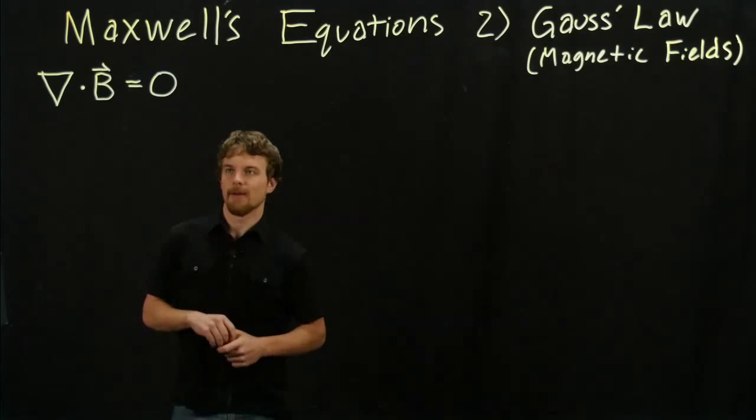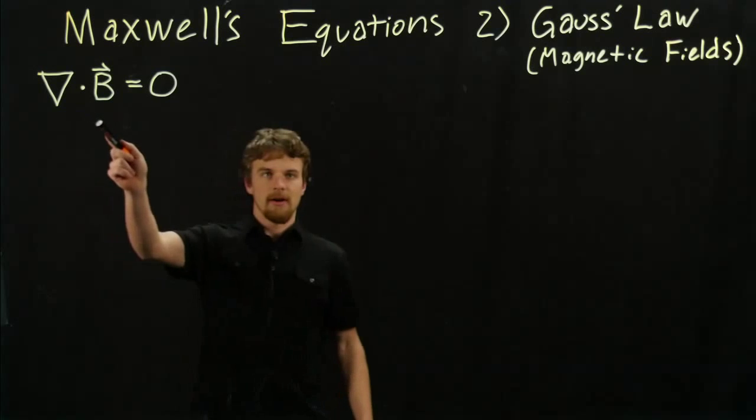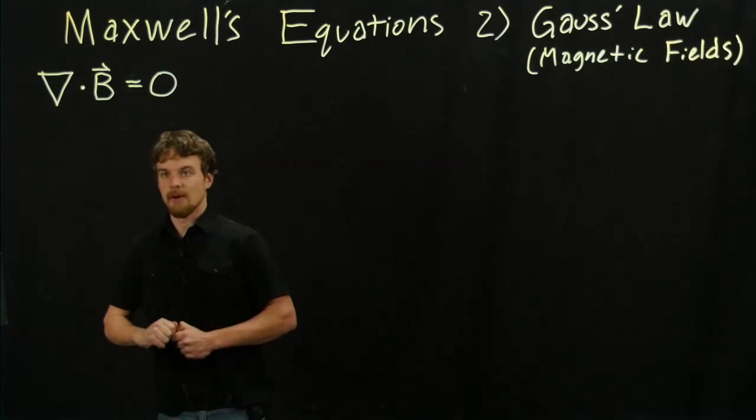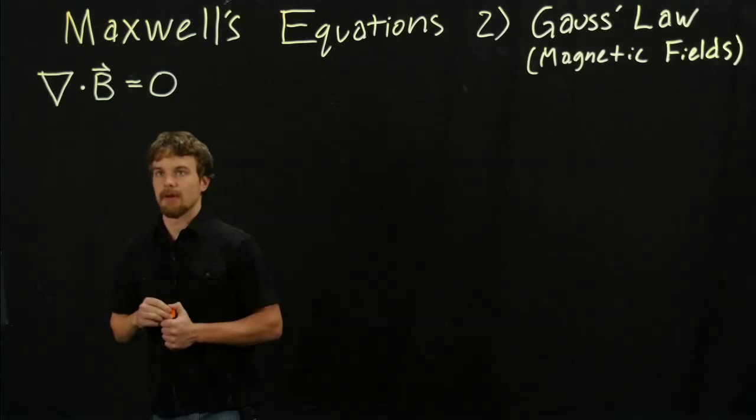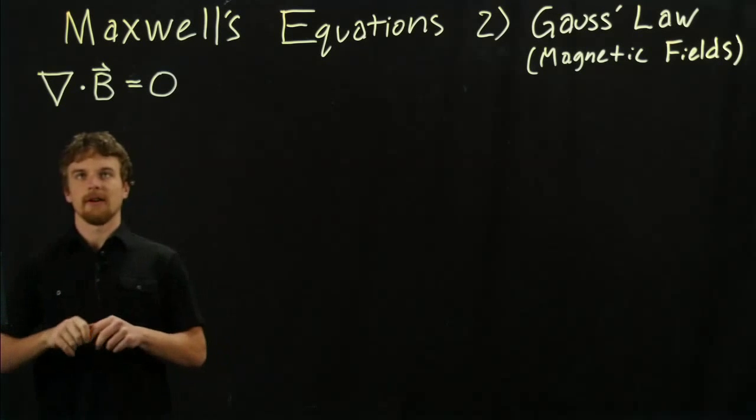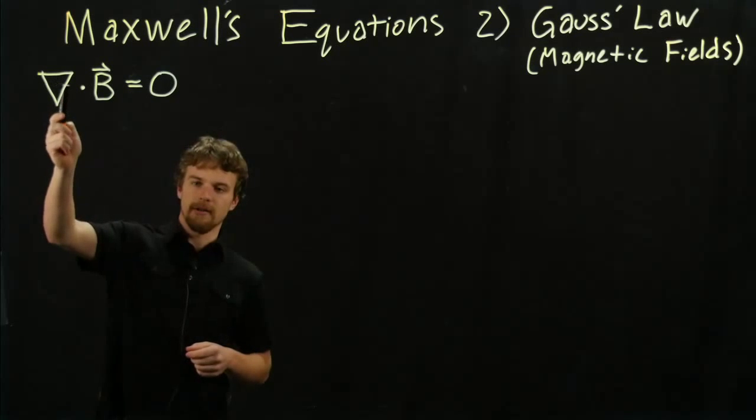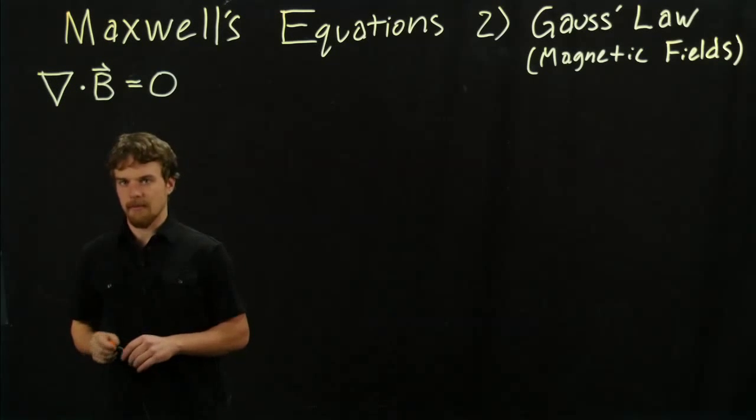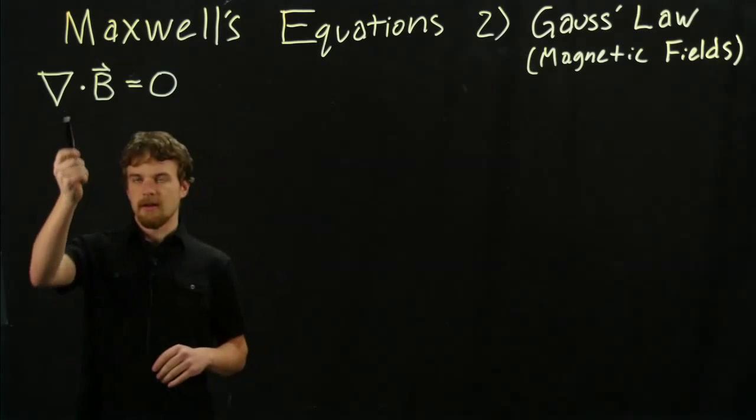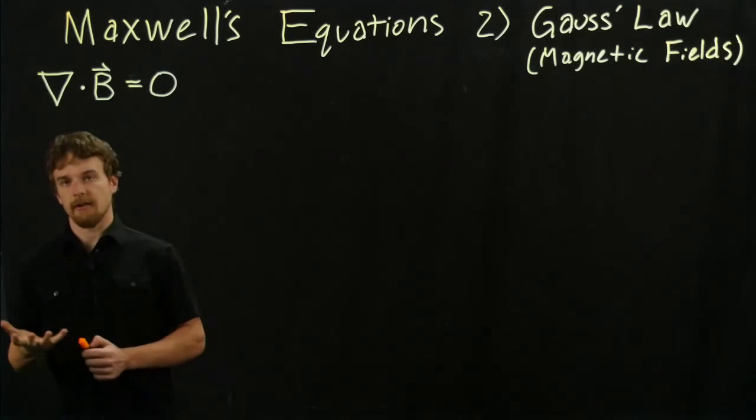This week we have a similar looking equation. This is the differential form of Gauss's magnetic field law. This side looks the same as it did for electric fields. What does this mean again? This is the divergence of the magnetic field, and this is defined for a point in space and it's a scalar quantity.